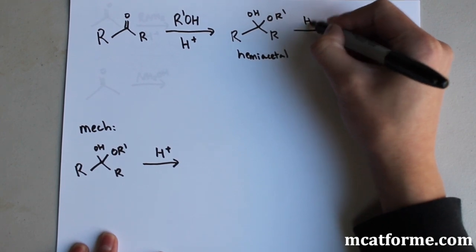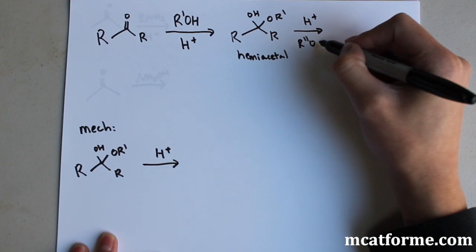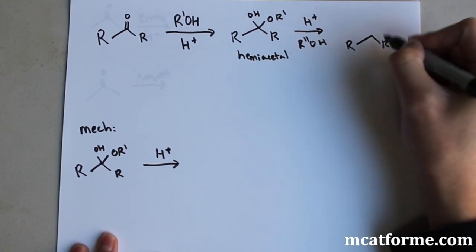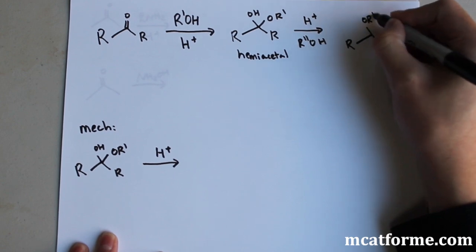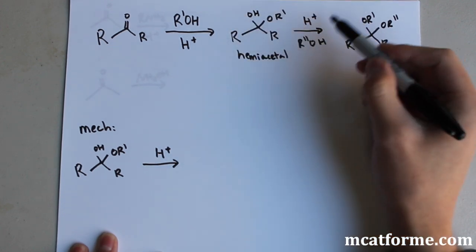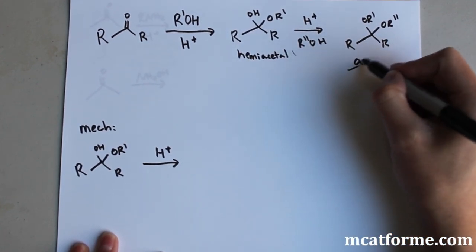And so if we react this again with another alcohol, what's going to happen is we're going to get something called an acetal. So what we replaced was this OH is now replaced for this OR prime, double prime, and this is called an acetal.